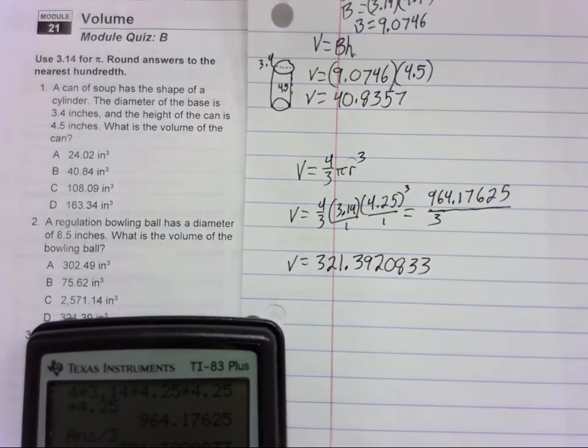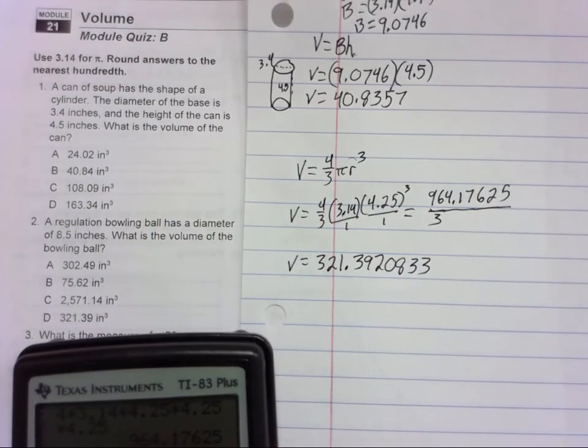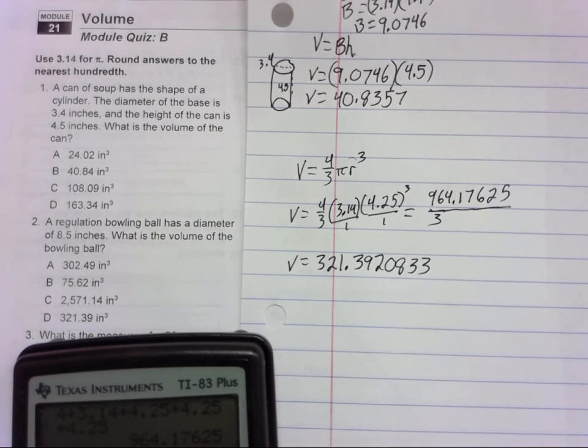So when we round that, because obviously we're going to have to, the answer for number two is D, 321.39.